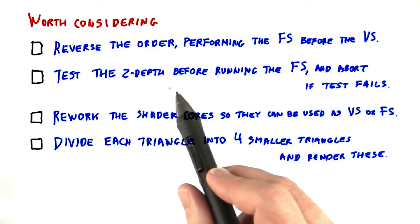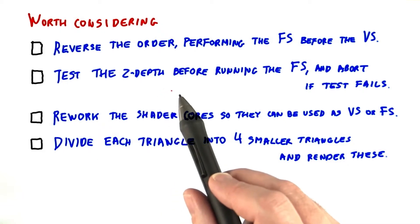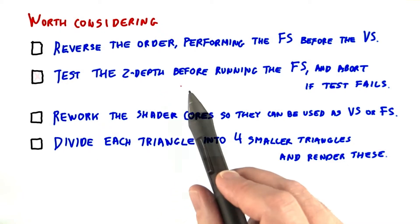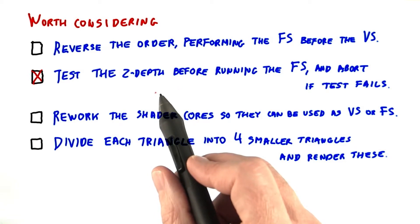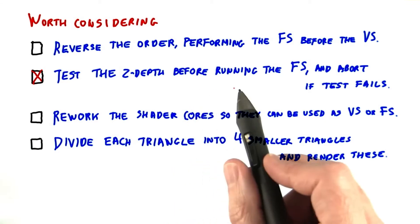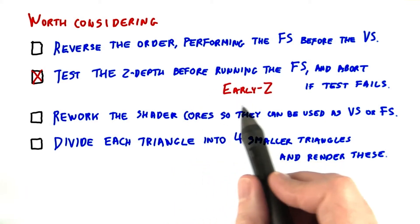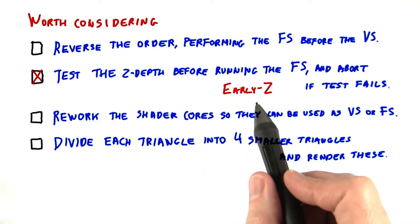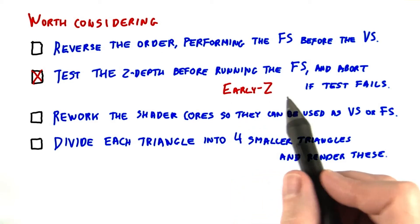The second idea is a good one. If we know early on that the fragment is not visible, then we don't have to use the fragment shader at all. GPUs take advantage of this and so perform the z depth test early, saving on executing the fragment shader's program. This type of speedup is called early z. After the fragment is computed, it's then put into the z buffer and color image as usual.